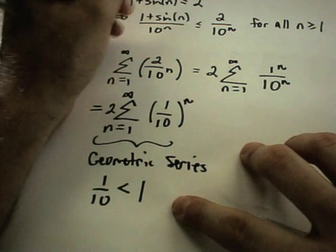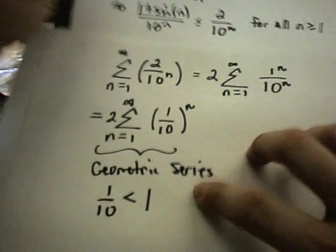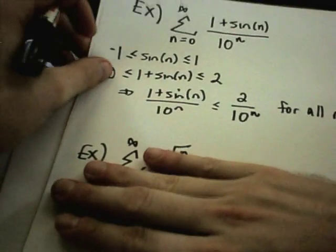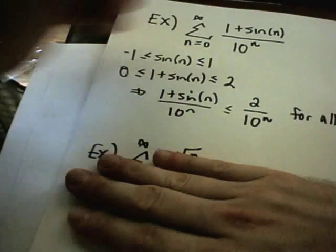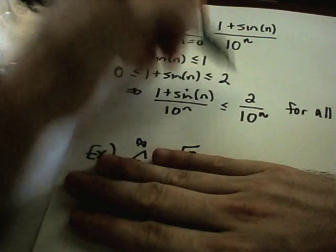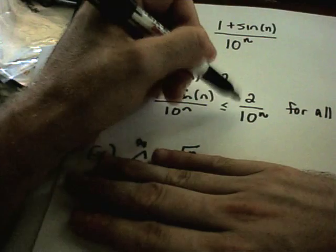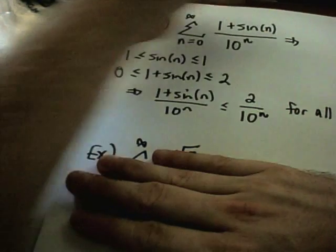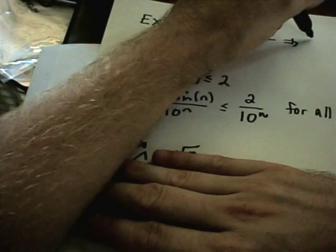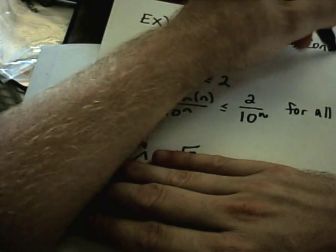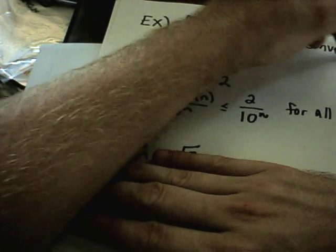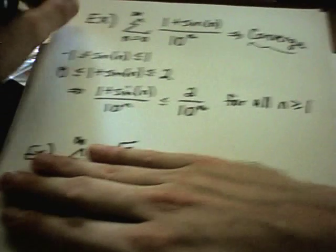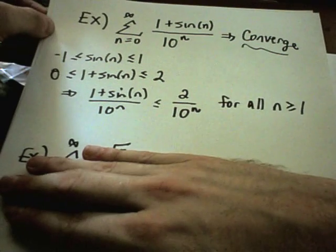We've shown that 1 plus sine of n over 10 to the n is smaller than that geometric series. Since the geometric series converges and this one is smaller, this series will also converge. So that's an example of the direct comparison test.